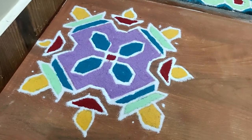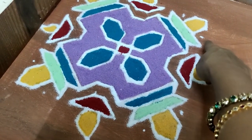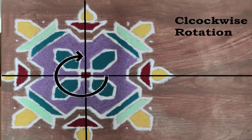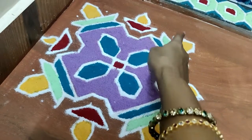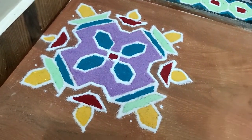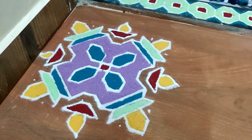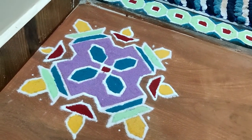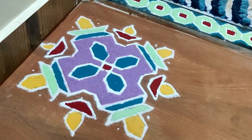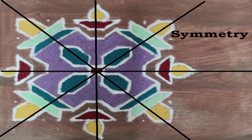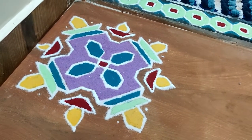Along with that, the concept of rotation is also touched upon. Let's have a closer look: if this particular shape gets rotated 90 degrees clockwise, then we land upon this shape; if this shape gets rotated 90 degrees anti-clockwise, we land upon this shape. Similarly, all four corners are 90 degree clockwise as well as 90 degree anti-clockwise rotations of each other. So a simple act of making Rangoli during Diwali is dealing with four different mathematical concepts: tessellations, reflection, rotation, and symmetry.